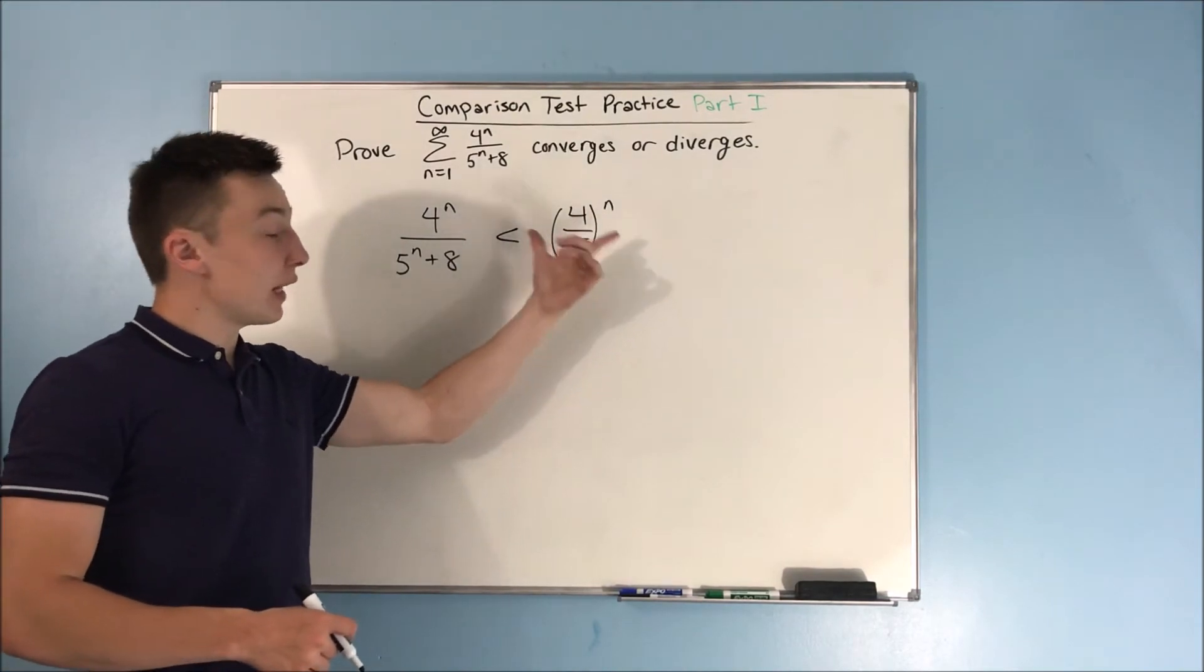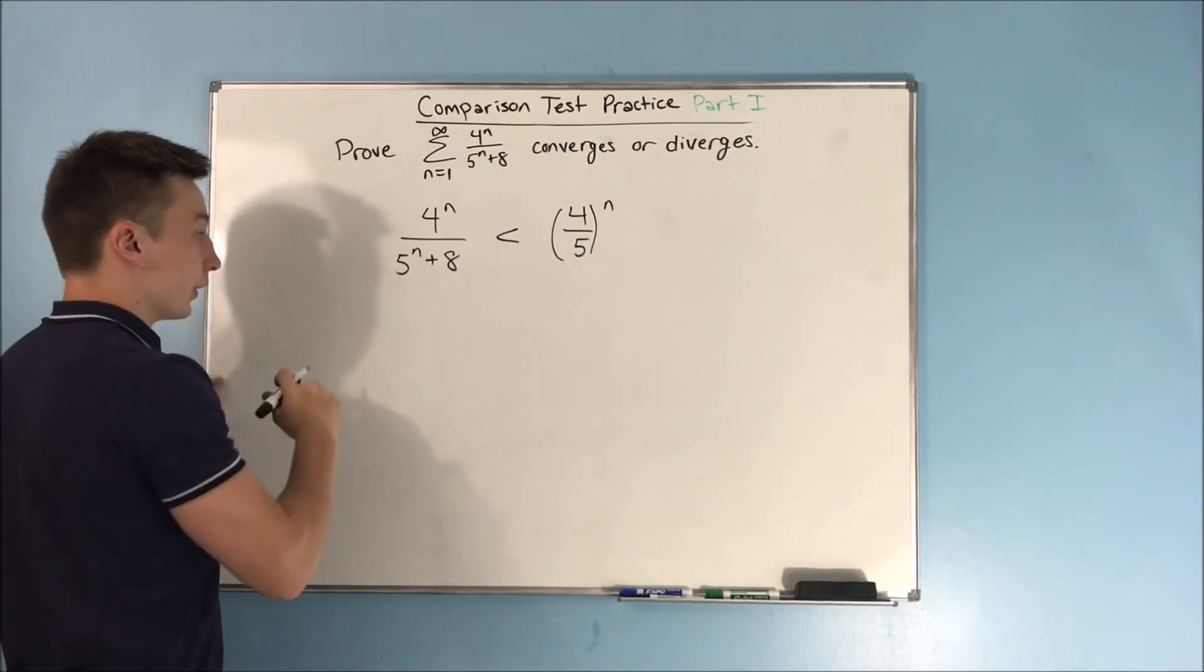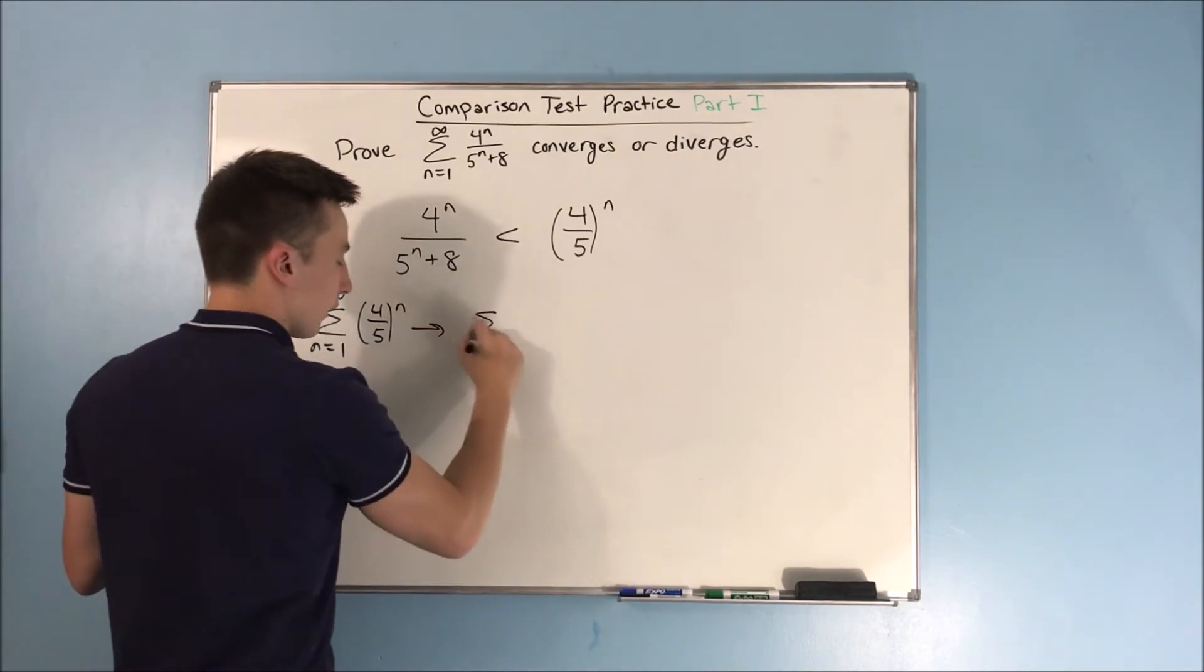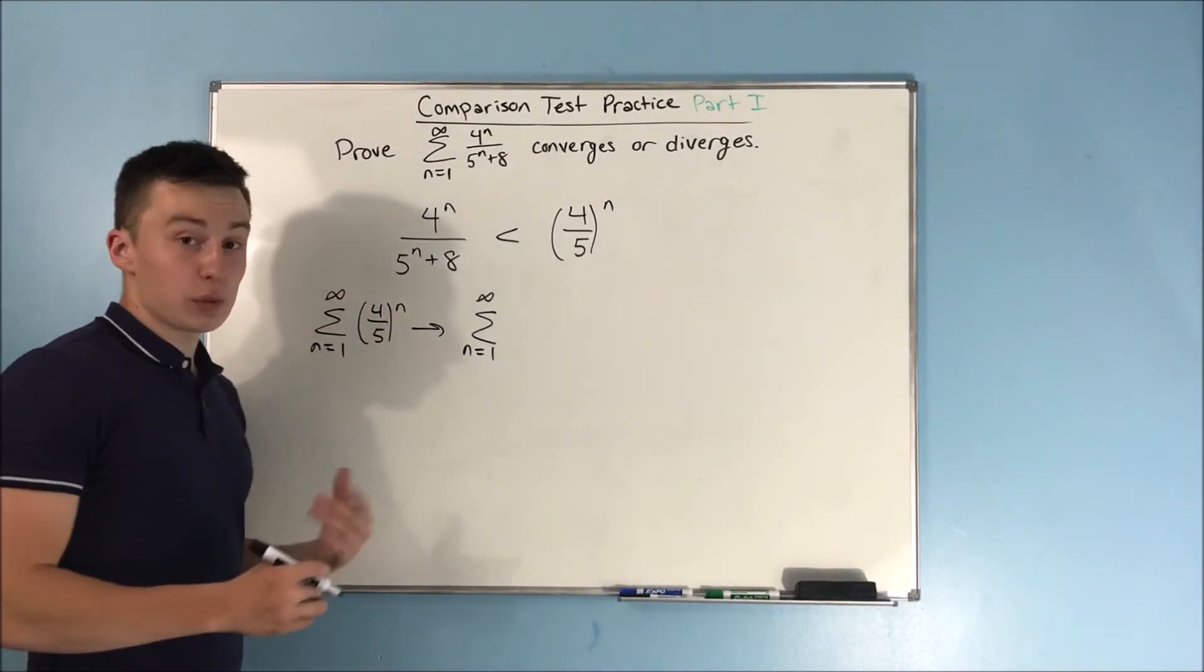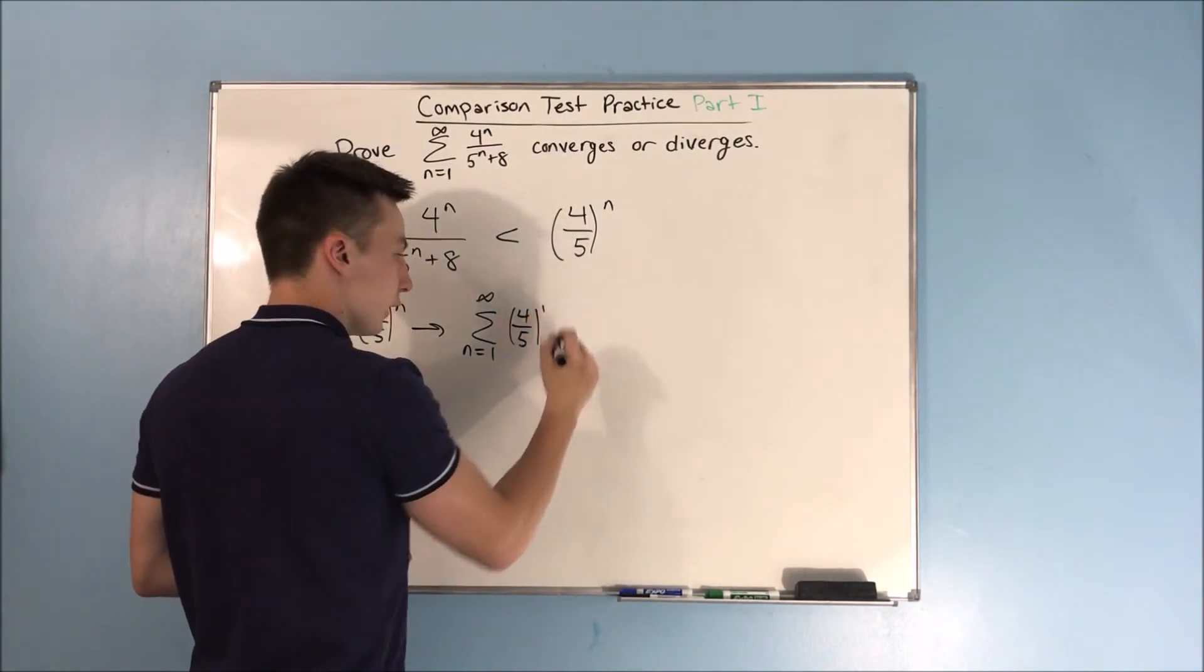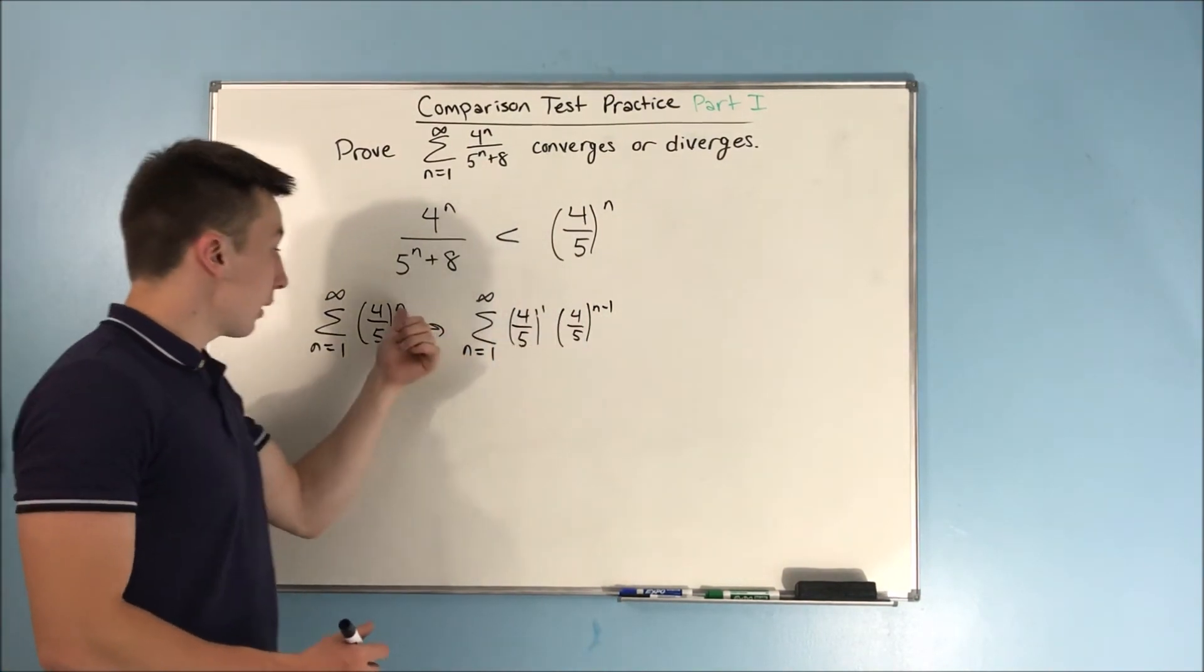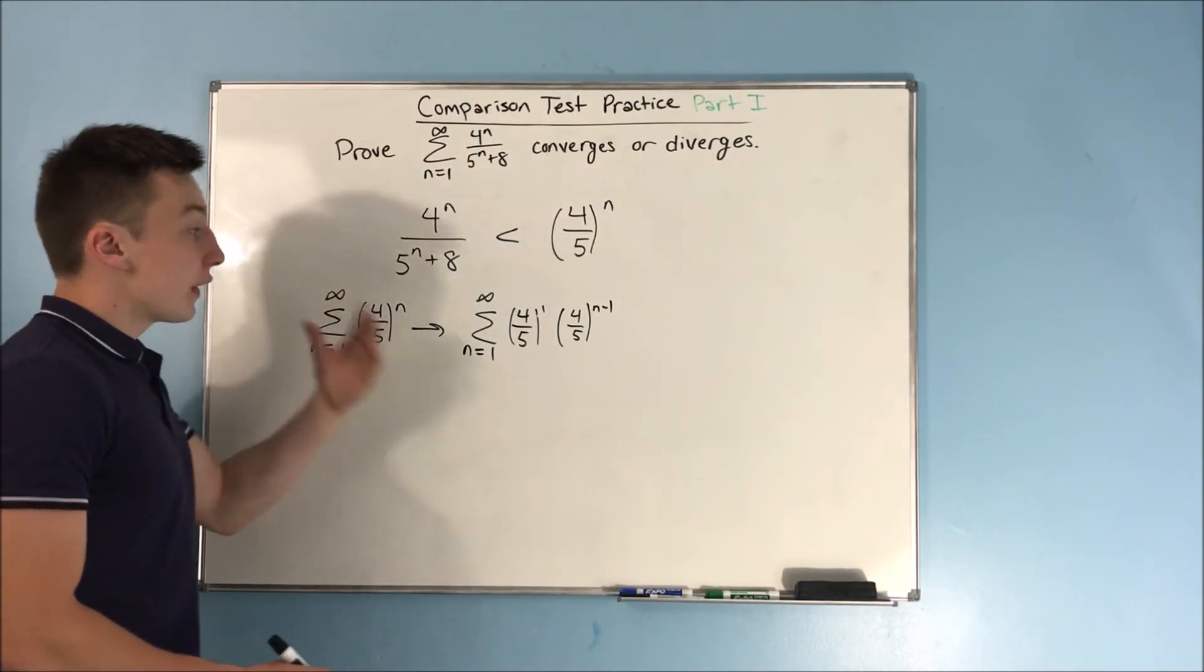Now, we need to see if this 4 over 5 to the n will converge. Because if it does, then that's going to be great, because then we know that this will converge as well. So let's see here. We have the sum from n equals 1 to infinity of 4 over 5 to the n, which we can rewrite as the sum from n equals 1 to infinity of, well, we need to try to make this an n minus 1. To do that, we have to have 4 over 5 to the first power times 4 over 5 to the n minus 1. If you multiply these together, you have to add the exponents, which means that you're just going to be left with an n, because this 1 is going to cancel out with the negative 1. So, now, this is a geometric series.